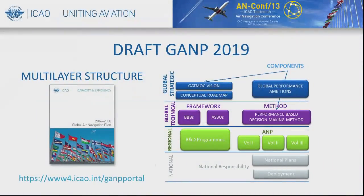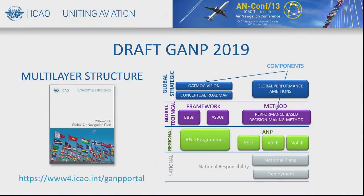In order to achieve all of this, we are proposing for the 2019 edition of the GAMP a multilayer structure. Everybody complains that the GAMP is complex — and it is — but the air navigation system is a complex system, and the information in the global air navigation plan is incomparable to any other plan in the world. We have therefore moved the plan from paper to a web-based platform.